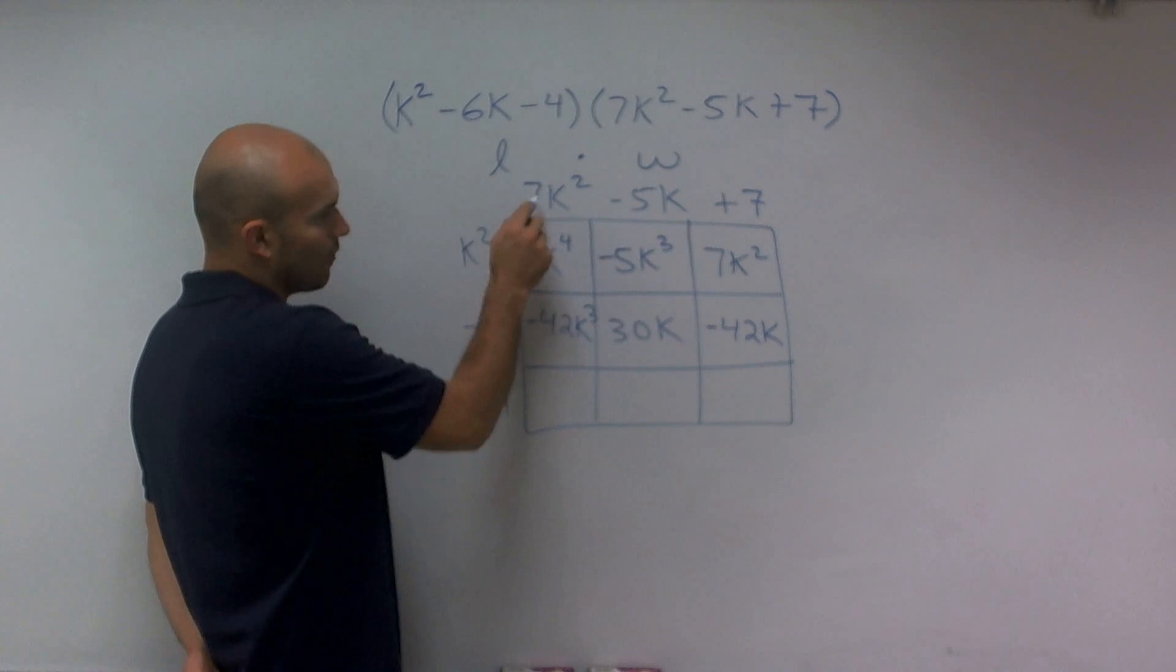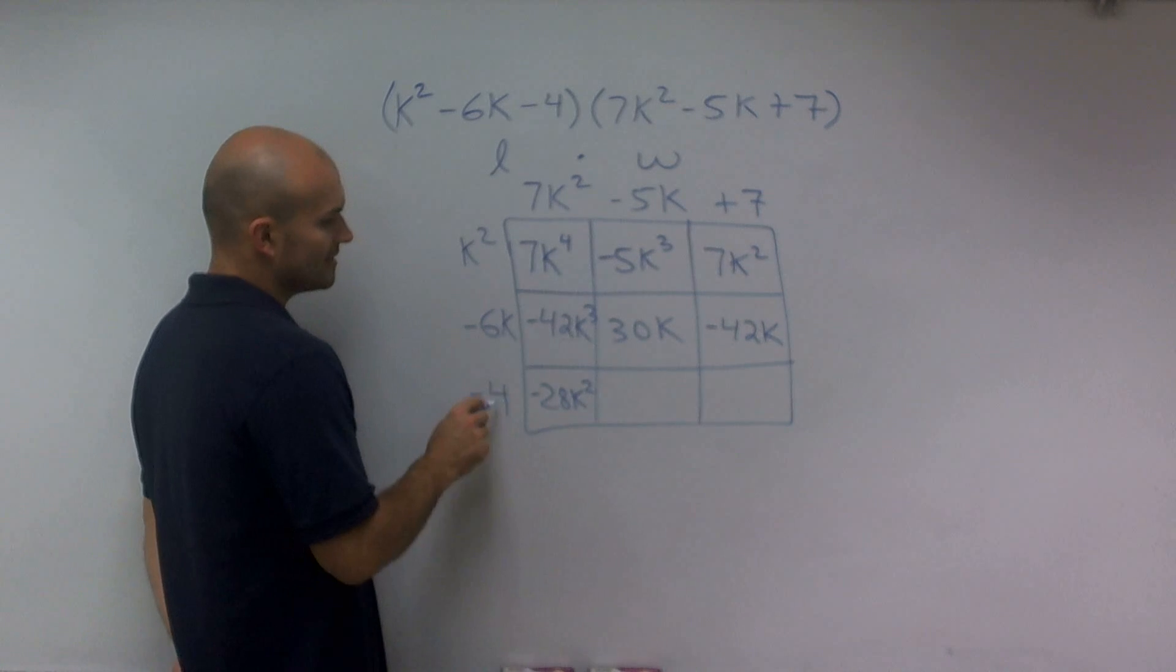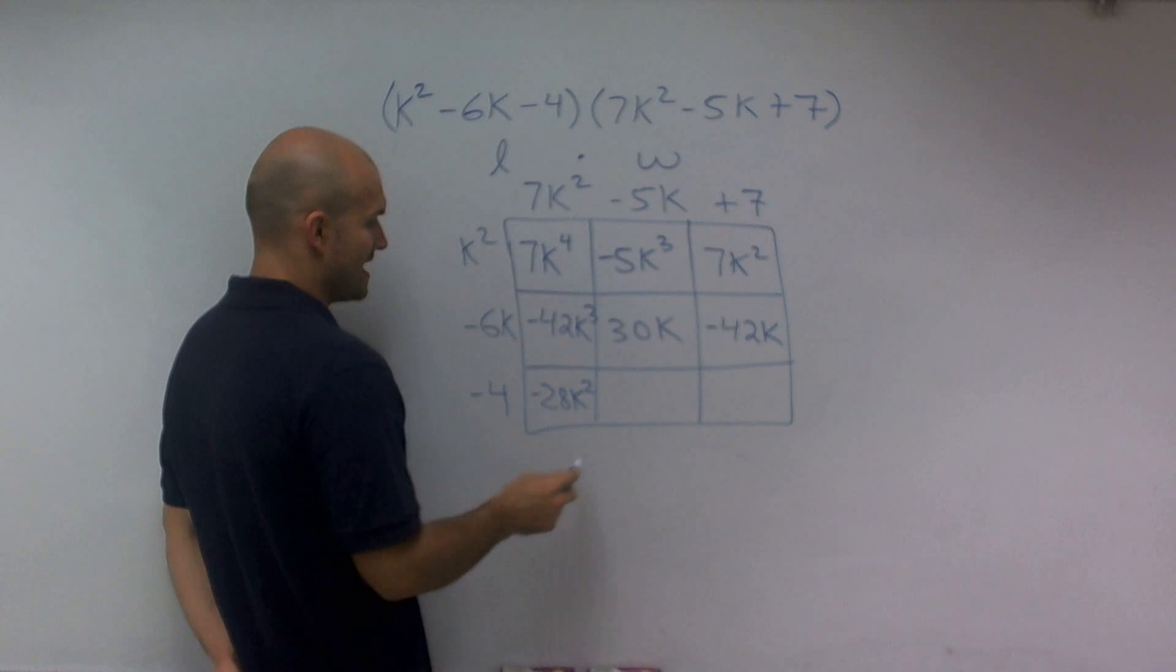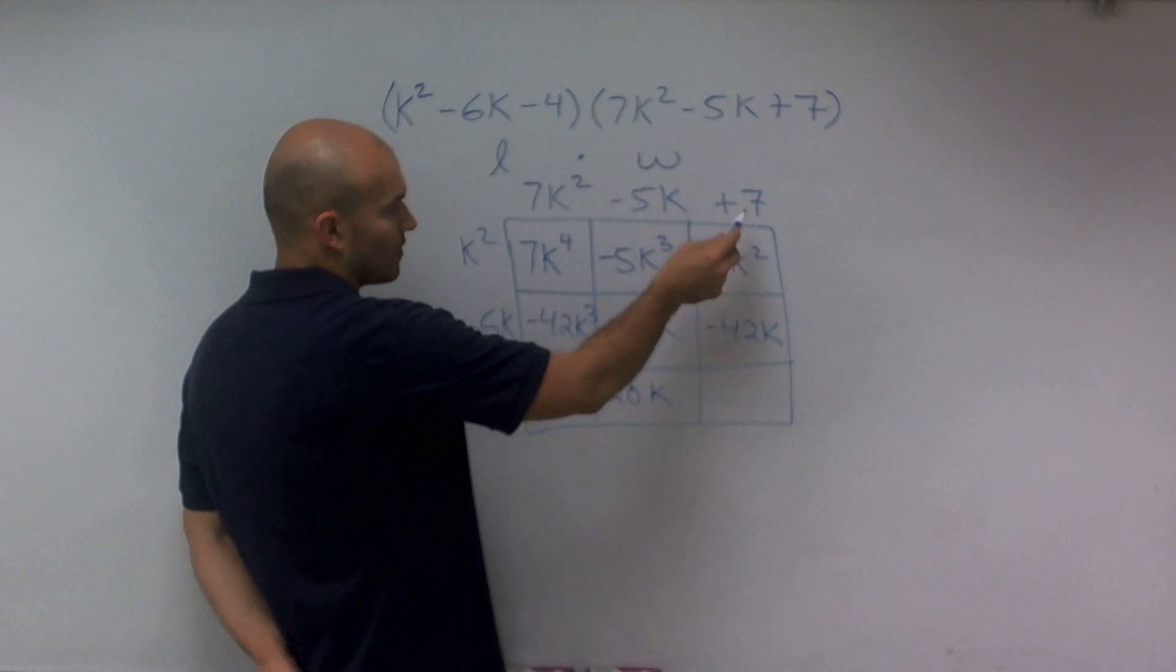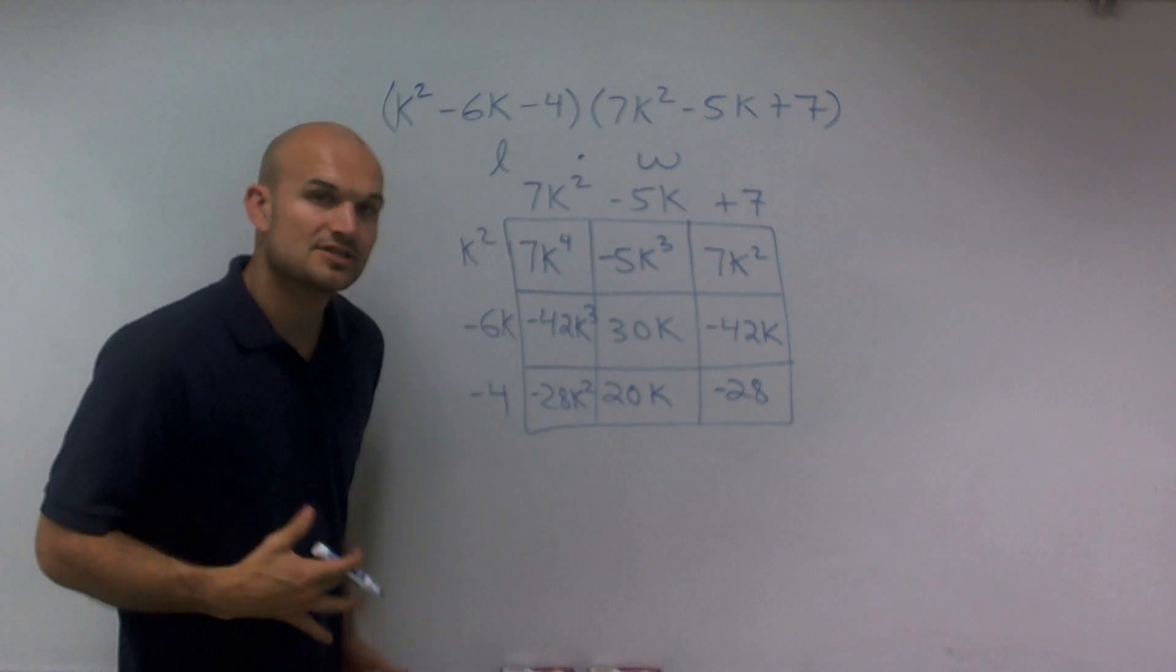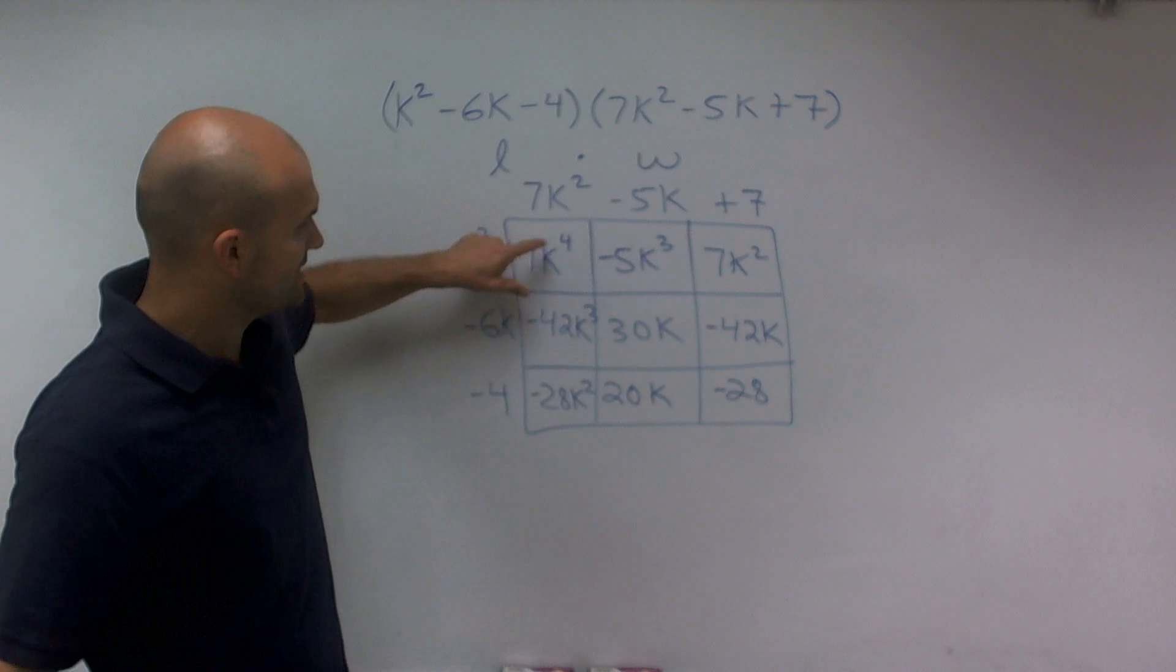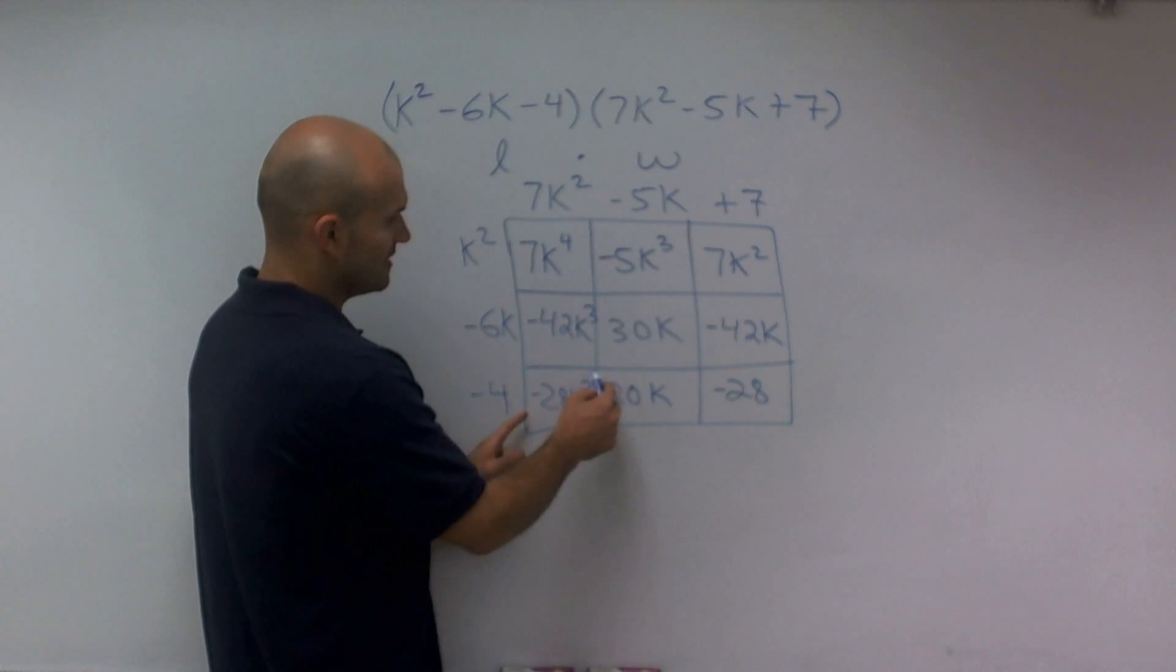Negative 4 times positive 7k squared is negative 28k squared. Negative 4 times negative 5k gives me positive 20k. And negative 4 times positive 7 gives me negative 28. Just to go over this again, all I did to find the area of each one of these is I just multiplied its length times its width for each one of these boxes.